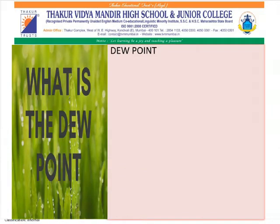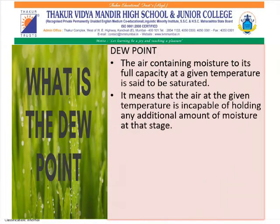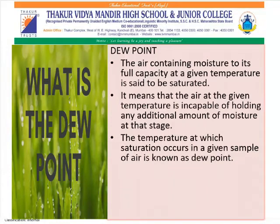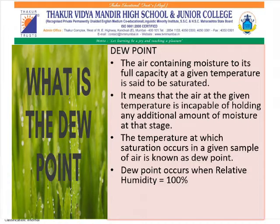What is dew point? The air containing moisture to its full capacity at a given temperature is said to be saturated, meaning the air is incapable of holding any additional moisture. The temperature at which saturation occurs in a given sample of air is known as the dew point. Dew point occurs when relative humidity is 100%. When relative humidity of the air becomes 100%, vapor starts condensing, and the temperature of the air is at the dew point. For condensation, temperature should be low and relative humidity must be high.